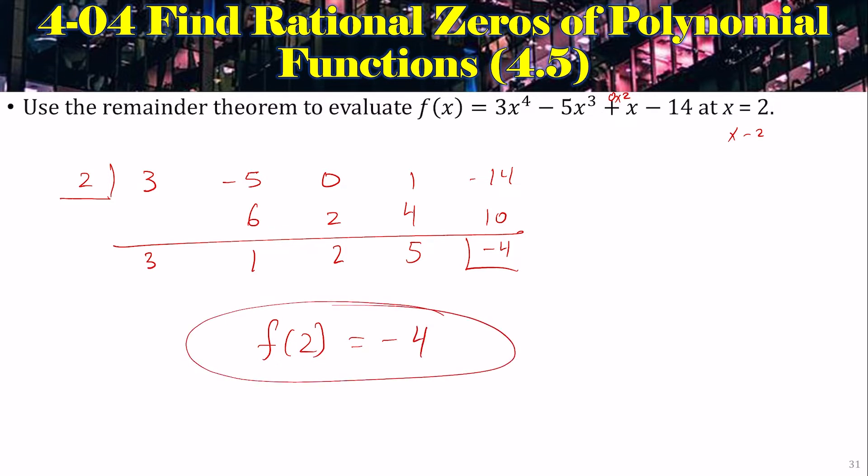And you can double check that by plugging in a 2 in your calculator. 3 times 2 to the 4th, minus 5 times 2 cubed, plus 2 minus 14. 2 to the 4th is 16. 2 cubed is 8. 3 times 16 is 48. 5 times 8 is 40. 48 minus 40 is 8, plus 2 is 10, minus 14 is negative 4. Look at that. You get the same answer, only it's much easier doing the synthetic division.